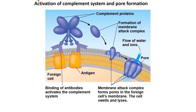In activation of the complement system and pore formation, it involves the interaction of the antibody, the antigen of the pathogen, and complement proteins circulating in our body fluid. When an antibody binds to the antigen of the pathogen — for example, bacteria — it will activate the complement proteins. The complement proteins will form a membrane attack complex on the cell membrane of the bacteria. The membrane attack complex will form pores in the cell membrane, causing a flow of water and ions into the bacteria. The bacteria will swell and this will lead to lysis of the cell.